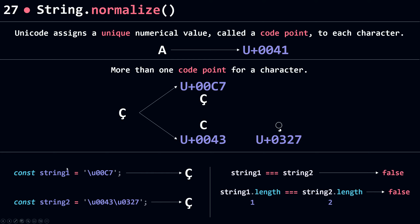When you compare these two strings you get false, and when you compare their lengths you also get false — because the length of string1 is 1 and the length of string2 is 2. String1 has a single character, string2 has two characters. For an end user these two look the same, but for your app they are not. So if the user searches using one form and your app stores the other, it will not return the expected result. That's why we need to use normalize.